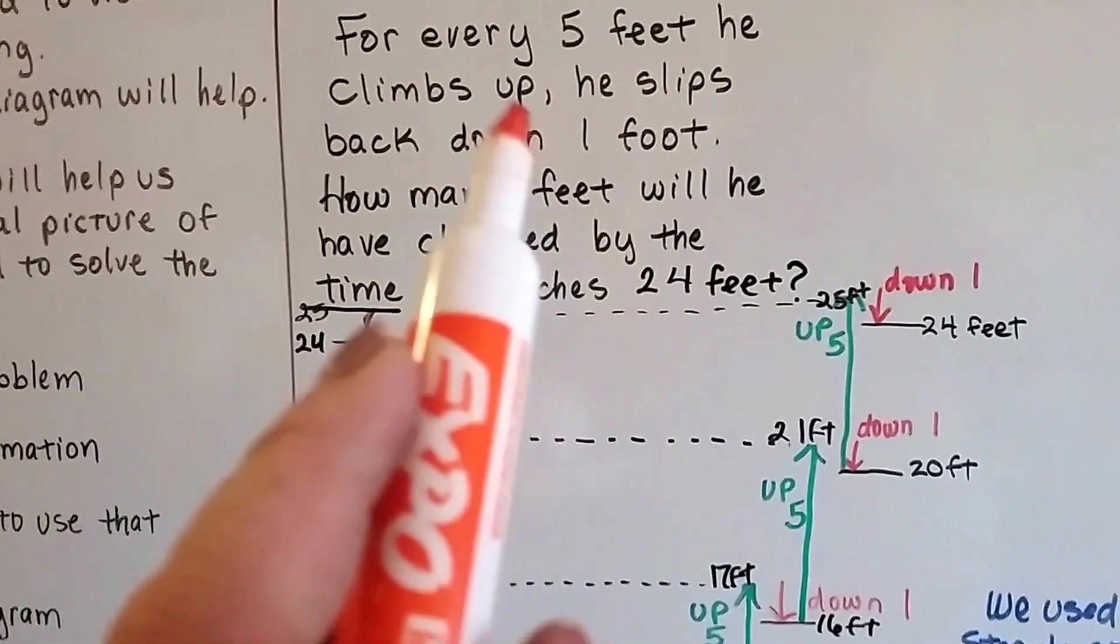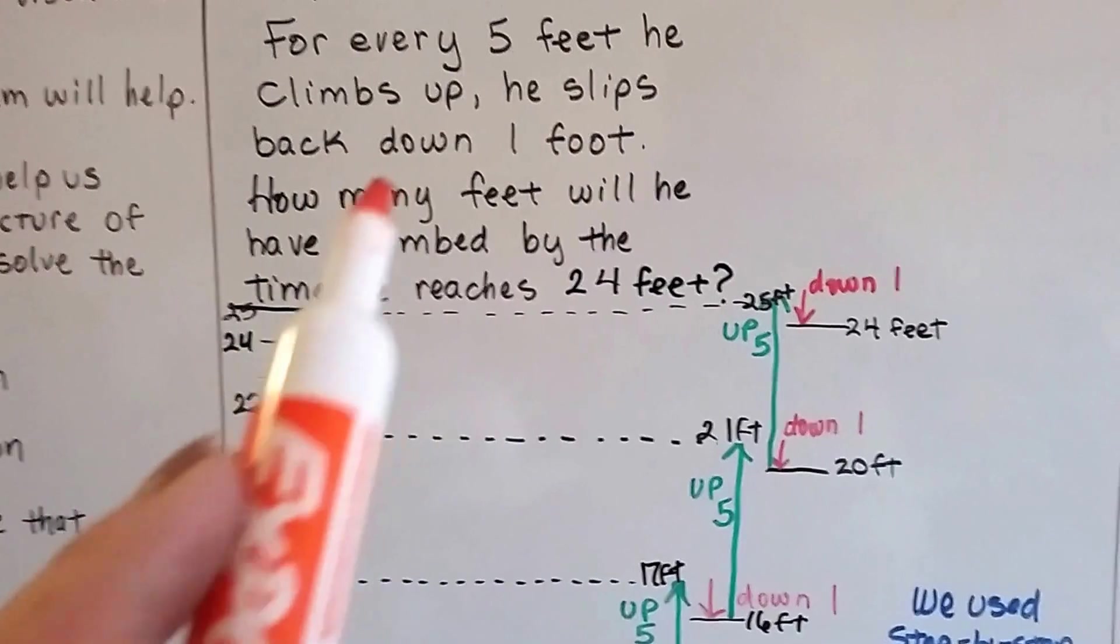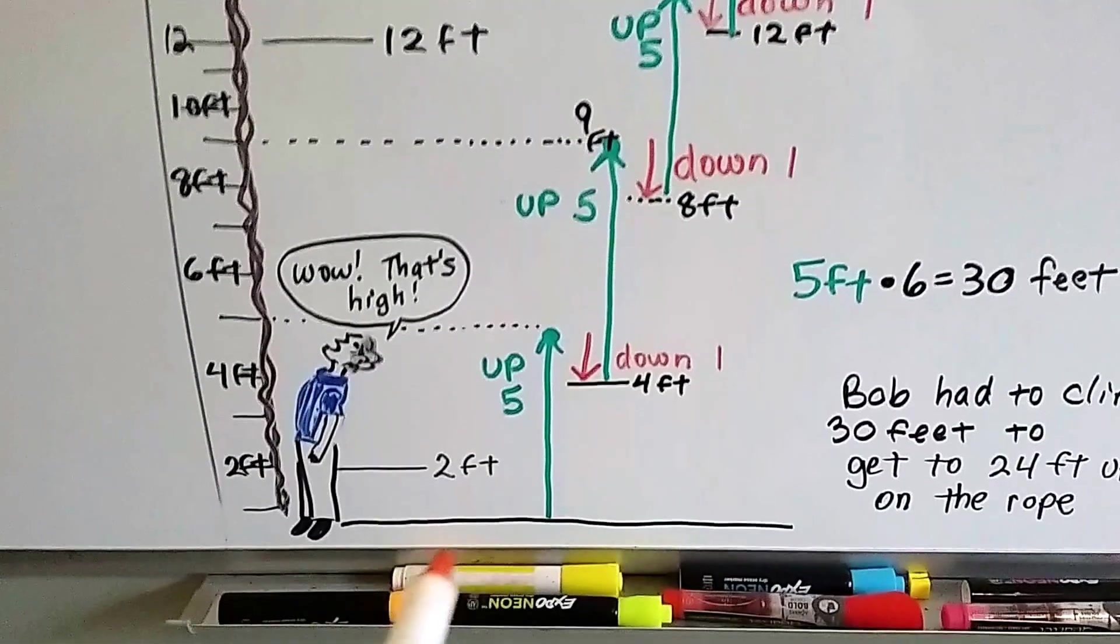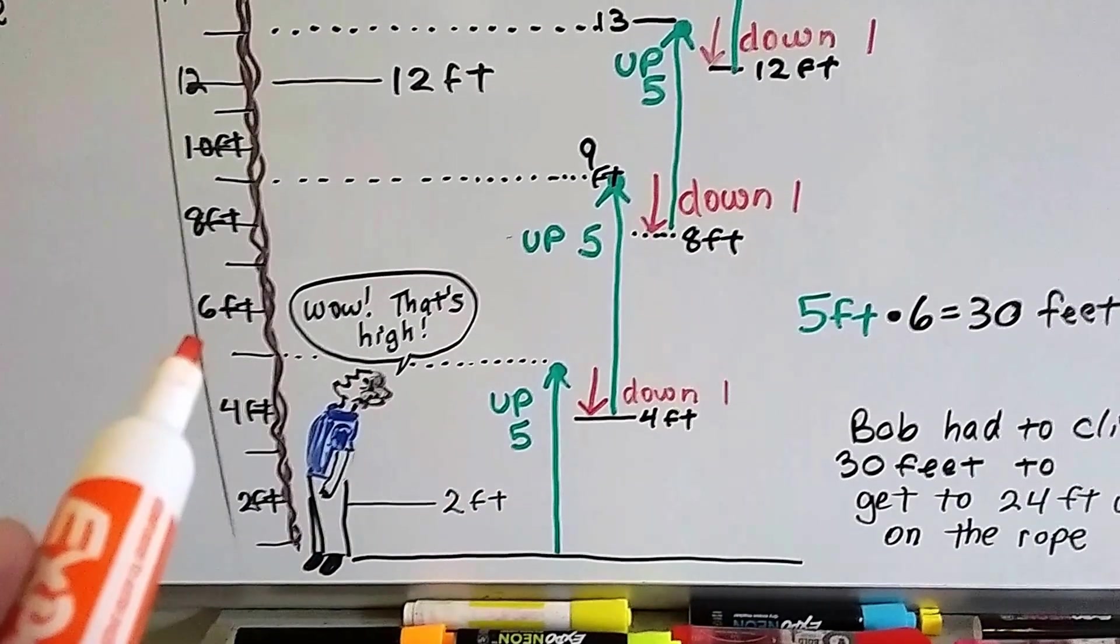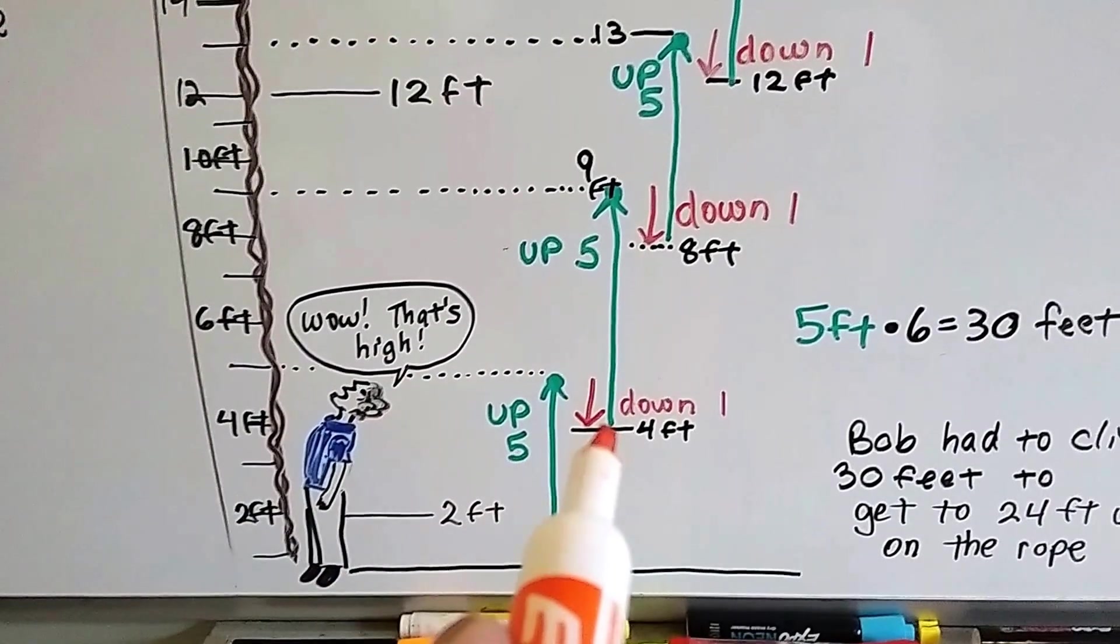Because remember what it says, for every five feet he climbs up, he slips back down one. So he was at zero, and he climbed up five feet, and that got him to the five mark. Then he slipped down one, so it brought him to four.